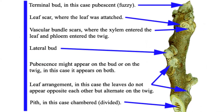Zooming in on a particular twig, we can look at the terminal bud, which is often diagnostic — sometimes it's fuzzy, sometimes it has a particular shape. The leaf scar where the leaf was attached can be, for example, a heart-shaped leaf scar. The vascular bundle scar is where the xylem entered the leaf and the twig — those can look like dots, be continuous, or have certain shapes. That's where the petiole was attached. We also have lateral buds lower down on the twigs that might have axillary leaves or shoots.